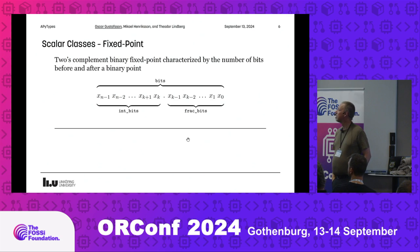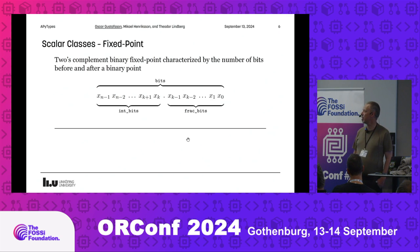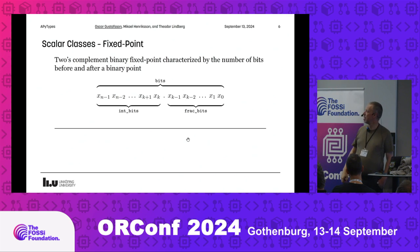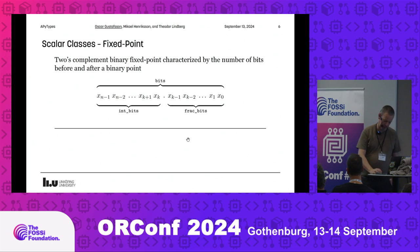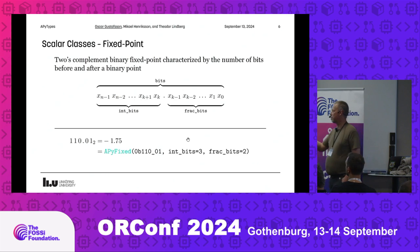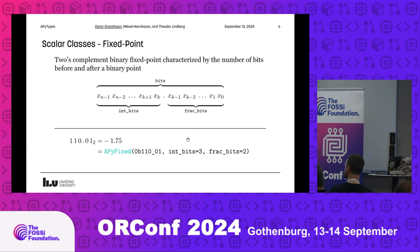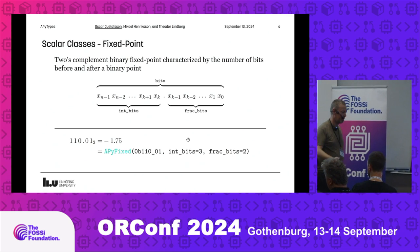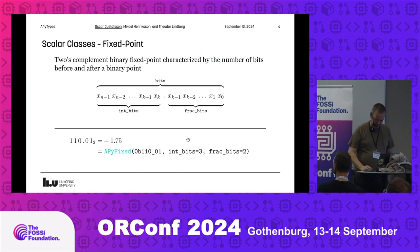As a reminder: a fixed-point number is an integer, but we say we have a binary point somewhere — or maybe not even in between, it could be anywhere outside as well. So we have a number of integer bits and a number of fractional bits. For example, in binary two's complement this would be minus 1.75, represented with three integer bits and two fractional bits — a five-bit number that we operate on.